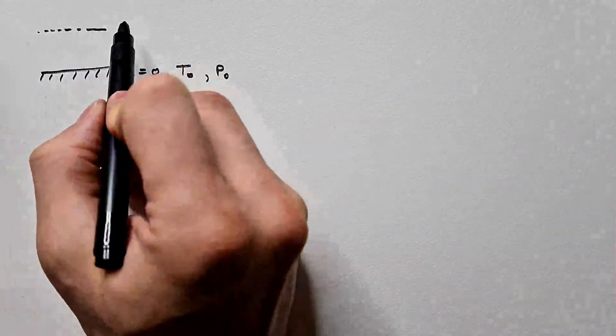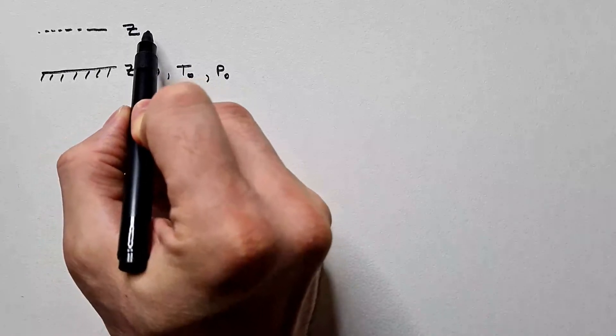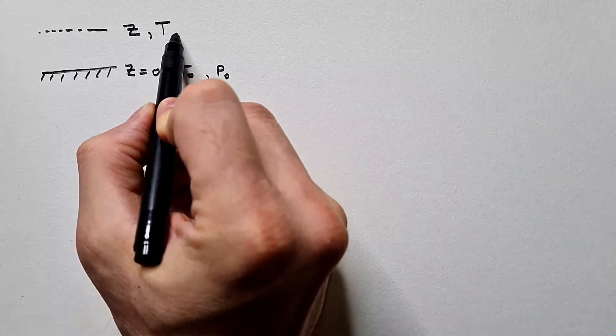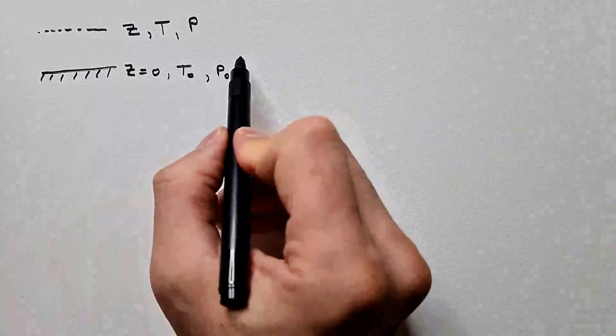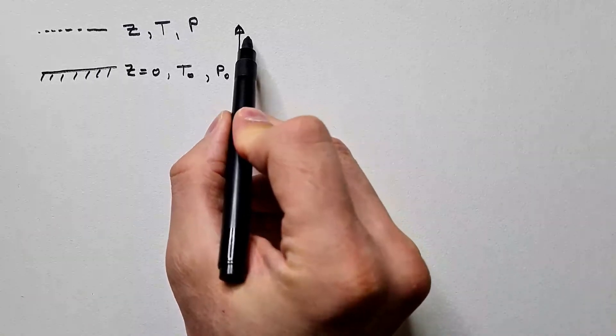let's say over here, we have height z, temperature T, and pressure P. Clearly, height is increasing like so, vertical axis.